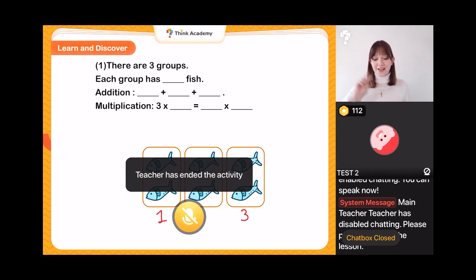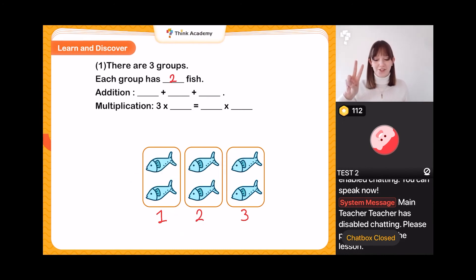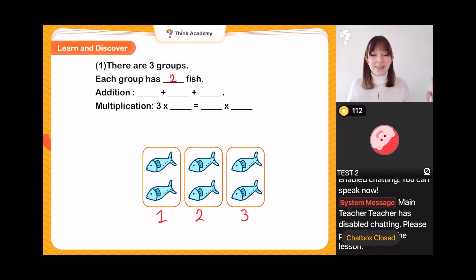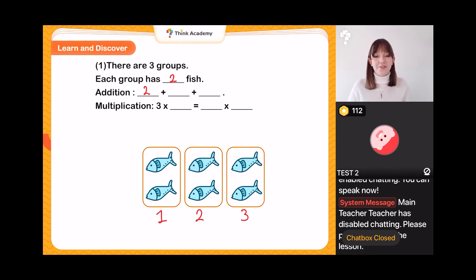Each group has two fish. Now if I want to know how many fish we have altogether — the total — we can do an addition sum. We could add up how many are in each group: the two fish in our first group plus the two fish in our second group plus the two fish in our third group.